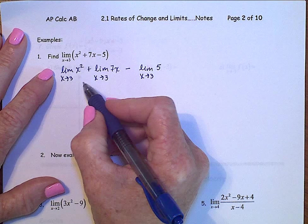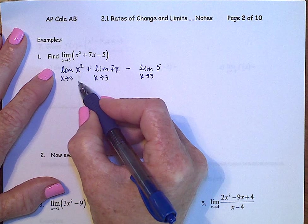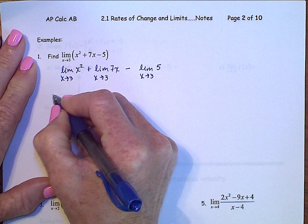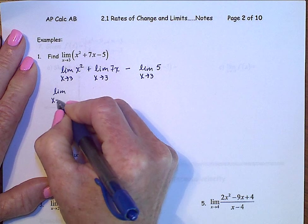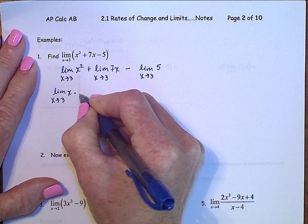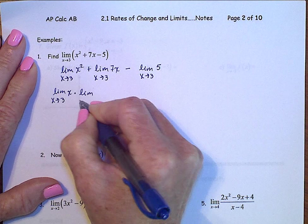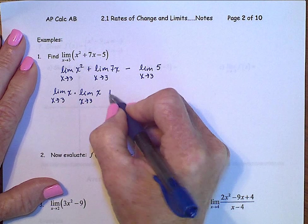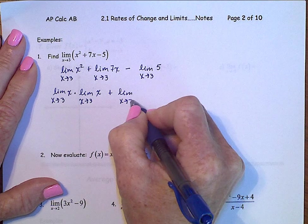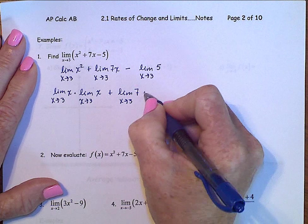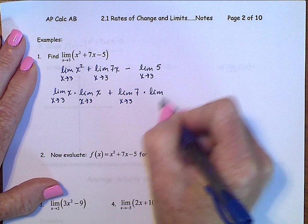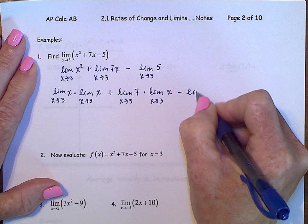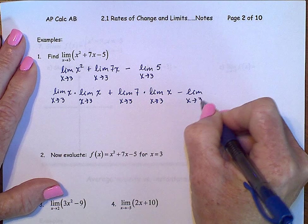Now I can go ahead and separate even further over some multiplication. So this x squared right here, let's rewrite that as the limit as x approaches 3 of x times the limit as x approaches 3 of x plus limit as x approaches 3 of 7 times the limit as x approaches 3 of x minus the limit as x approaches 3 of 5.